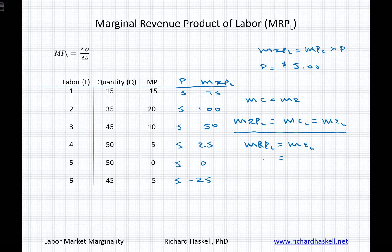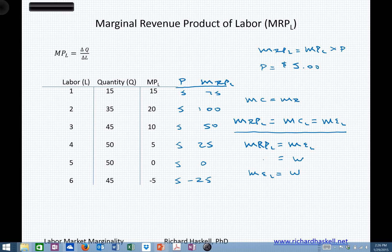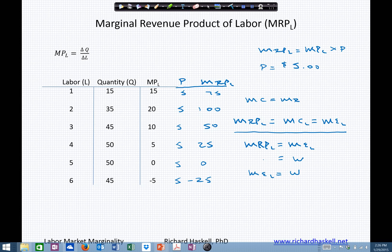You'll see that this is further thought of as marginal revenue product of labor being equal to the wage, which would suggest that at some profit-maximizing point, marginal expense of labor is equal to the wage. We'll talk about those in the upcoming segments on this topic.